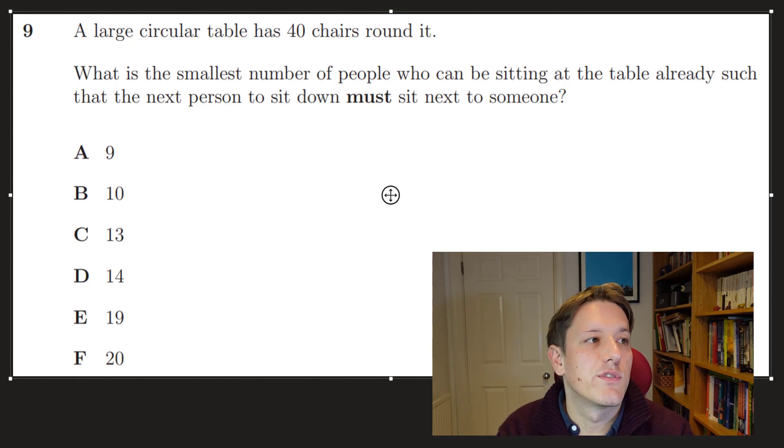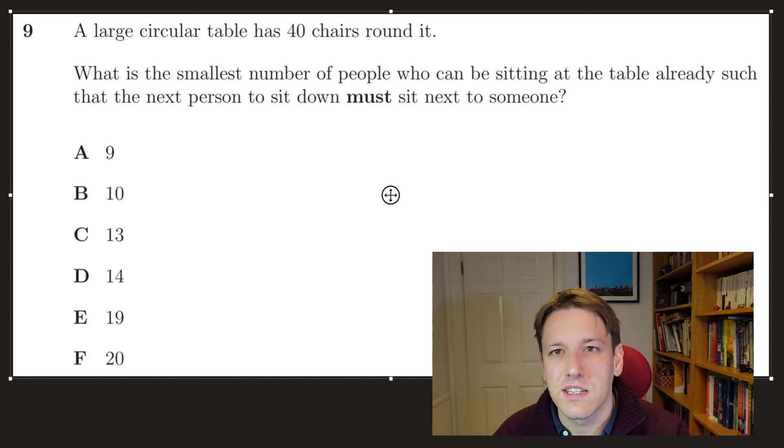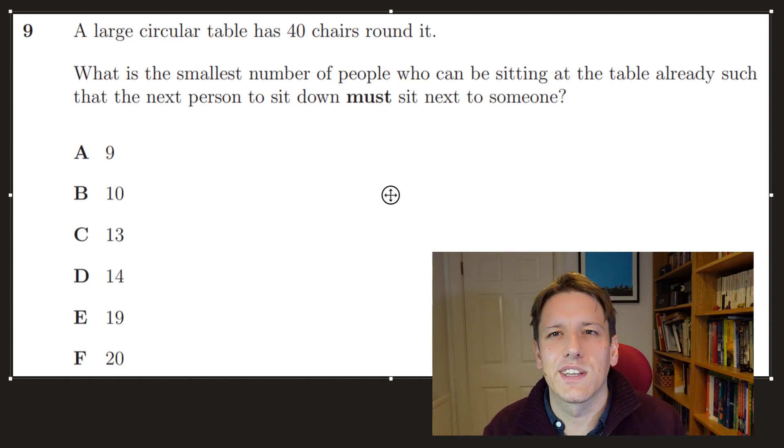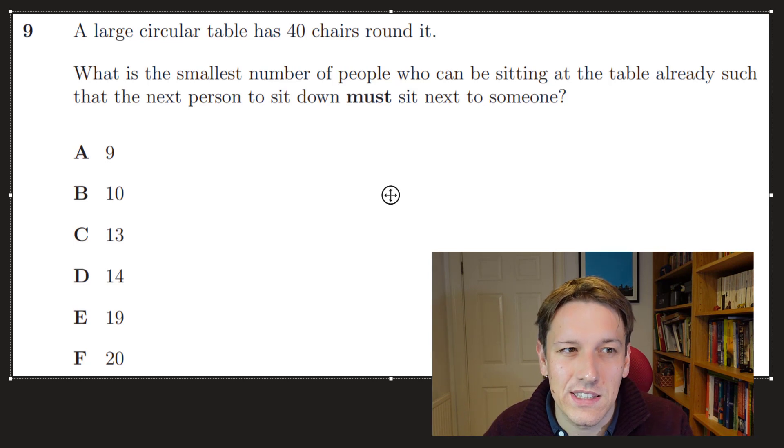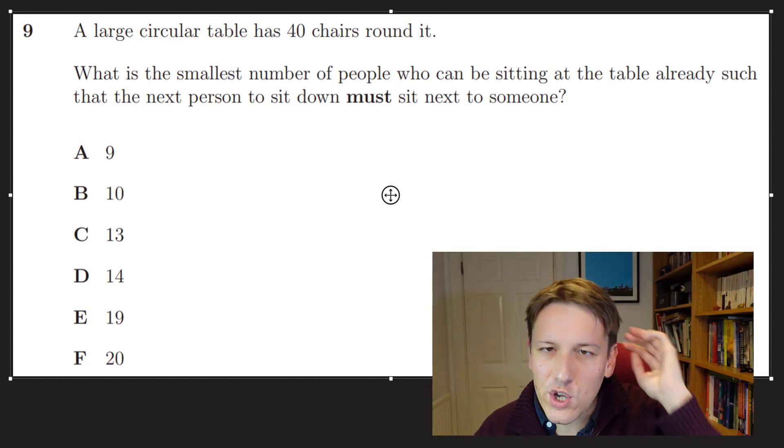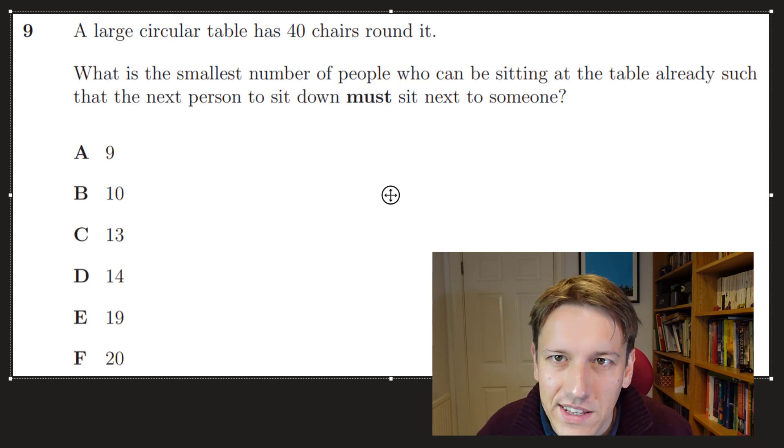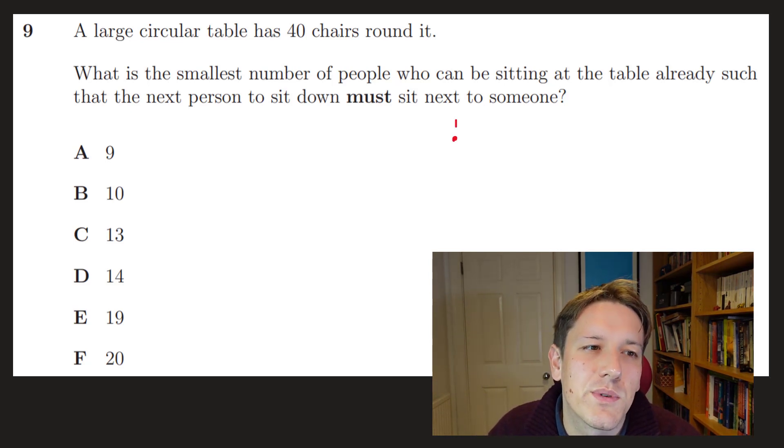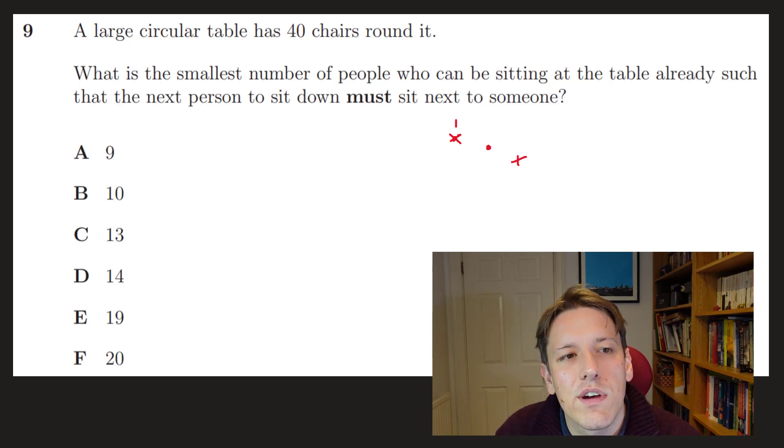Question 9, we've got a large circular table with 40 chairs around it, and we want to know what the smallest number of people who can be sitting at the table already such that the next person to sit down must sit next to someone. I actually misread this question first, but it's the smallest number of people who could be sitting at the table so that the next person must sit down next to someone. So imagine we wanted to use people efficiently here and seat them in such a way that we use as few people as possible in order to make it so that the next person is going to have to sit next to someone. So let's call this one seat 1, so let's just put someone in seat 1, doesn't matter where we start, so I could leave seat 2 empty.